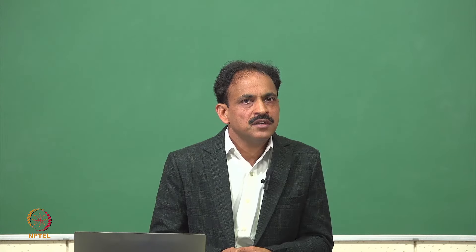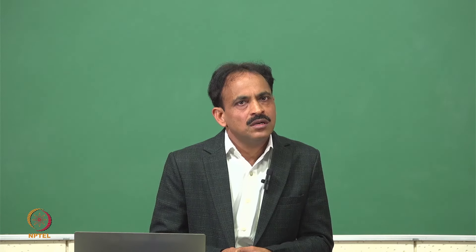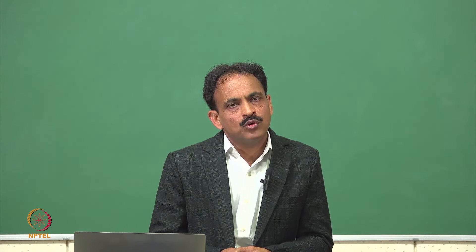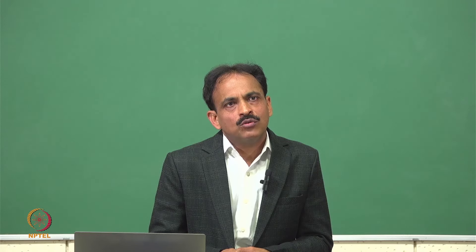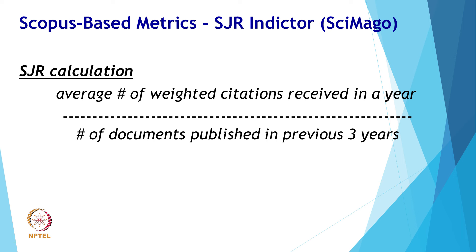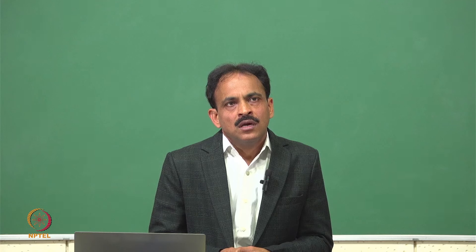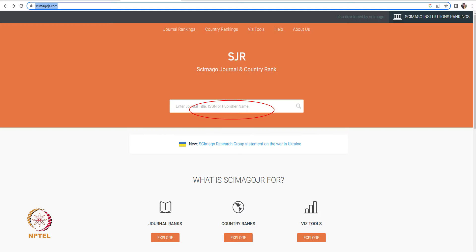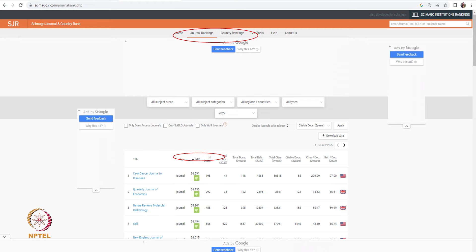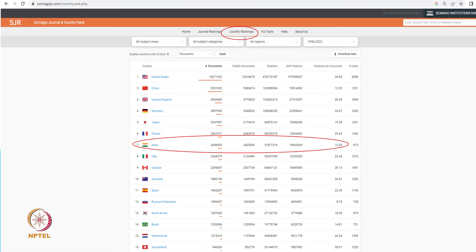SJR uses a three-year citation window and is calculated based on Scopus sources. To raise the SJR ranking, one needs to be published in more reputed journals — that is the only way to increase SJR. The formula is: average number of weighted citations received in a year divided by the number of documents published in previous three years. SJR is freely available and can be accessed online. From the SJR website you can find country-wise or journal-wise rankings; currently India is at level 7 in country-wise SJR.